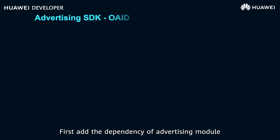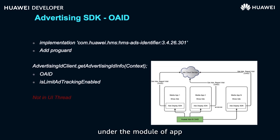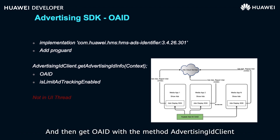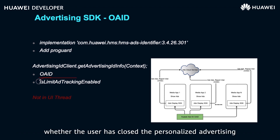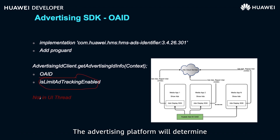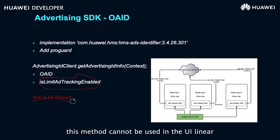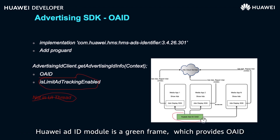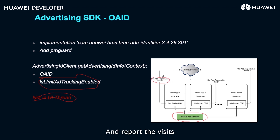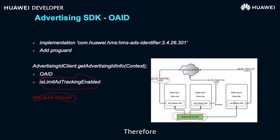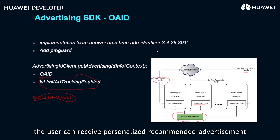Next I will introduce the advertising ID module. First, add the advertising module dependency under the app module and add ProGuard rules. Then get the OAID using the method AdvertisingIdClient. In addition to OAID, this method also reports whether the user has closed personalized advertising, and the advertising platform will determine whether to recommend personalized ads accordingly. Note that this method cannot be used in a UI thread. The Huawei AdID module — shown as the green frame in the diagram — provides OAID to third-party advertising platforms, which get advertisements based on OAID and report user visits.